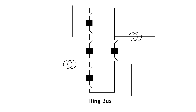Number 5. Ring bus. In the ring bus configuration, as the name implies, the circuit breakers are connected to form a ring, with isolators on both sides of each breaker.